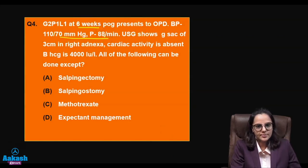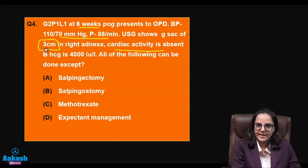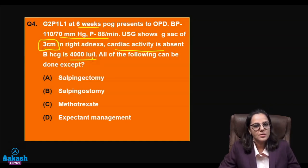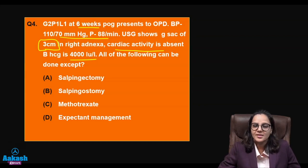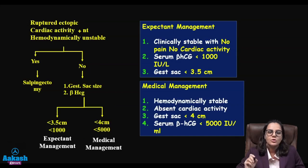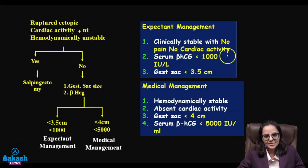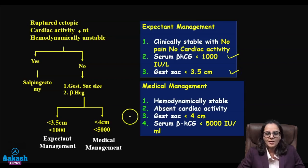Question four: a second gravida at six weeks presents to OPD with stable vitals, absent cardiac activity, gestational sac of 3 cm in the right adnexa, and beta-hCG of 4000. Is this a ruptured ectopic? No — cardiac activity is absent and she is hemodynamically stable. Next we look at gestational sac size and beta-hCG. Expectant management is possible when beta-hCG is less than 1000 and gestational sac is less than 3.5 cm.